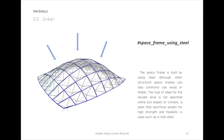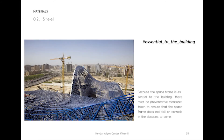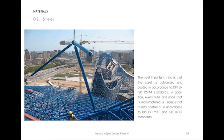The space frame is built using steel, although other structural frames can also commonly use wood or timber. The type of steel for the Haidar Alive Center is not specified online, but based on context, a steel that sacrifices weight for high strength and flexibility is used, such as mild steel. Because the space frame is essential to the building, preventative measures must be taken to ensure it does not fail or corrode. The most important measure is that the steel is galvanized and coated in accordance with DIN-EN-ISO-12944 standards. In addition, every tube and node manufactured is under strict quality control in accordance with DIN-ISO-9001 and ISO-14001 standards.